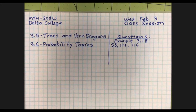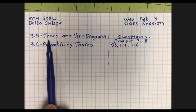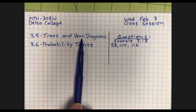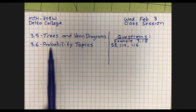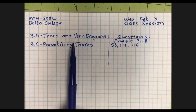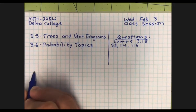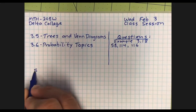Let's see which one I want to start with — start with a relaxed warm-up question possibly. Let's describe an example of using trees and an example of using Venn diagrams. Why don't we start with problem number 58?